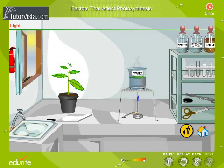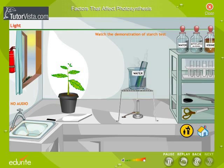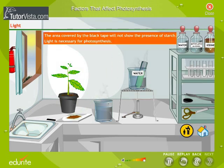After one day, remove the leaf and test for starch. The area covered by the black tape will not show the presence of starch. Light is necessary for photosynthesis. The rate of photosynthesis increases with the intensity and quality of light. The longer the exposure to light, the more is the production of glucose.